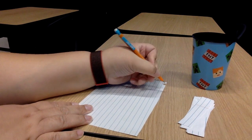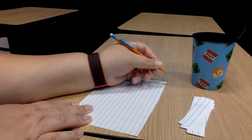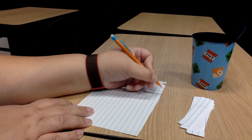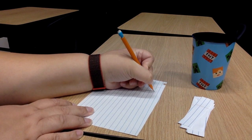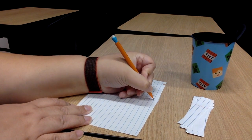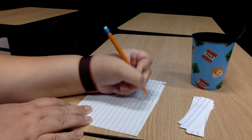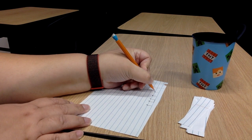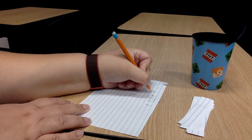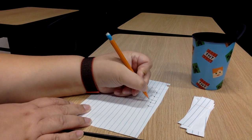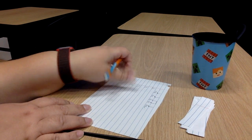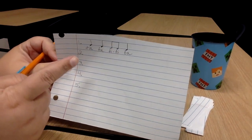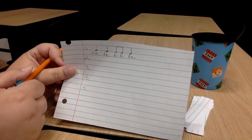We're gonna write our rhythms on this paper. For the first one we're gonna write ta ta ti-ti ta. We're gonna write the words underneath. Your first one should look like this: ta ta ti-ti ta.